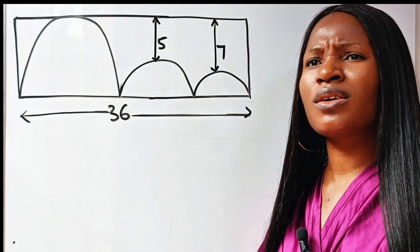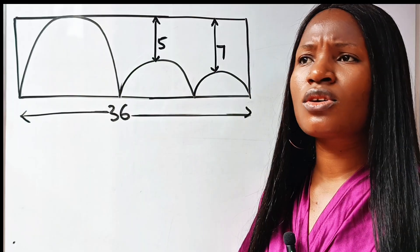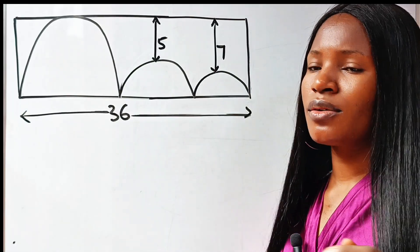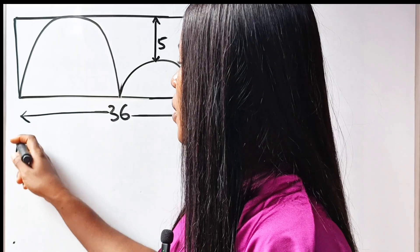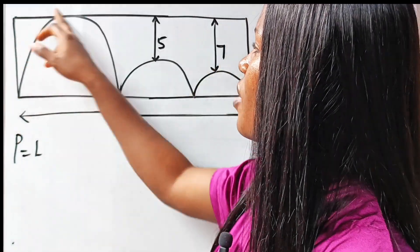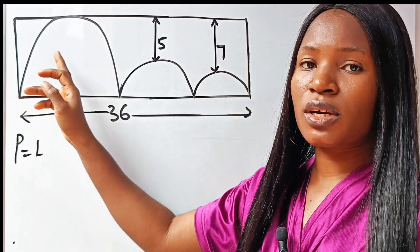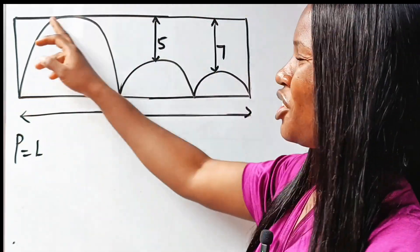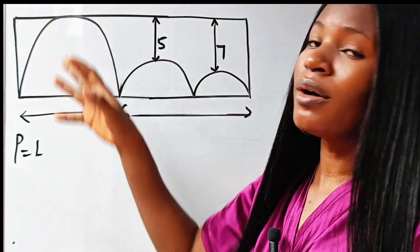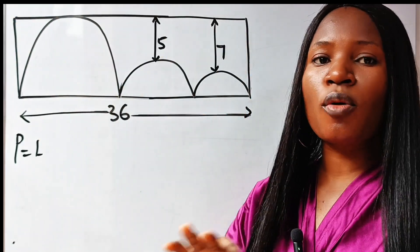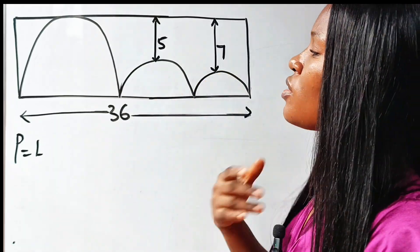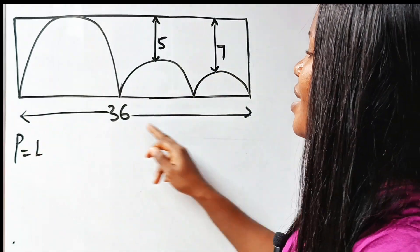First we need to understand the method or formula for finding the perimeter of any rectangle. The perimeter is the length around an object or around a shape — the external boundary. When you sum up all the lengths, you get the perimeter of any shape. We are already told that this is 36.